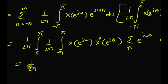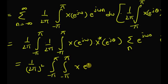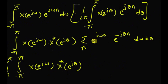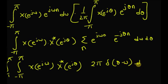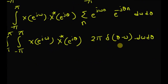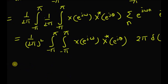By rearranging the double integral we have 1 by 2 pi squared, and then the integrals from minus pi to plus pi, minus pi to plus pi. We have x of e to the power j omega and x conjugate of e to the power j theta, and this summation is nothing but the DTFT of 1, which is 2 pi multiplied by delta of theta minus omega, and then d omega d theta. Now by using the shifting property — since we have a delta function — we can replace all the thetas with omegas, and we are left with only one integral, and one of the 2 pi's cancels with the 2 pi here.